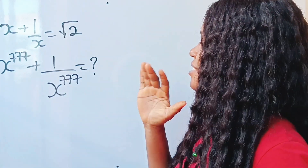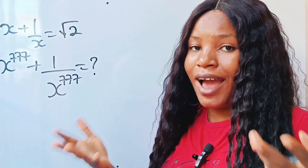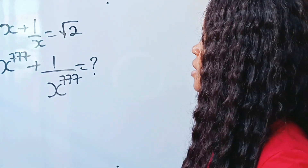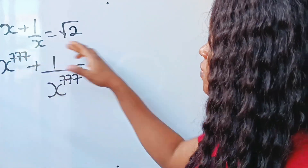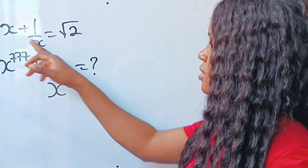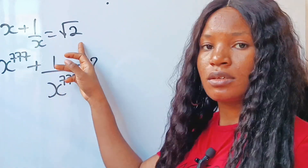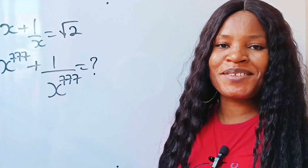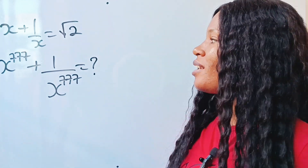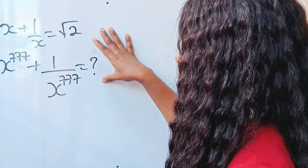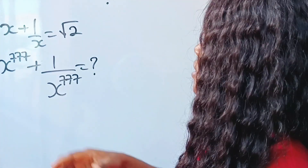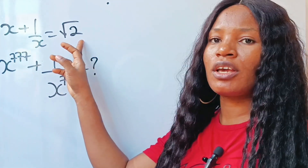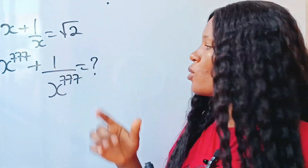This is a very nice and hard math Olympiad question. We're asked to solve for those values if this expression is equal to this. Welcome to today's class — let's get to the business of the day. When you look at this particular question, let's start by analyzing the one that is actually complete.